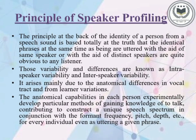What is the principle of forensic speaker profiling? The principle is based on the fact that identical phrases uttered by the same speaker or by different speakers are quite obvious to any listener. These variabilities and differences are known as intra-speaker variabilities and inter-speaker variabilities. They arise mainly due to anatomical differences in the vocal tract and from listener variations. The uses of these anatomical and physiological mechanisms with the help of speech organs produce frequency combinations particular to the individual, and experimentally develop a particular method contributing to build a unique speech spectrum, along with the formant frequency, pitch, and other features for each individual.